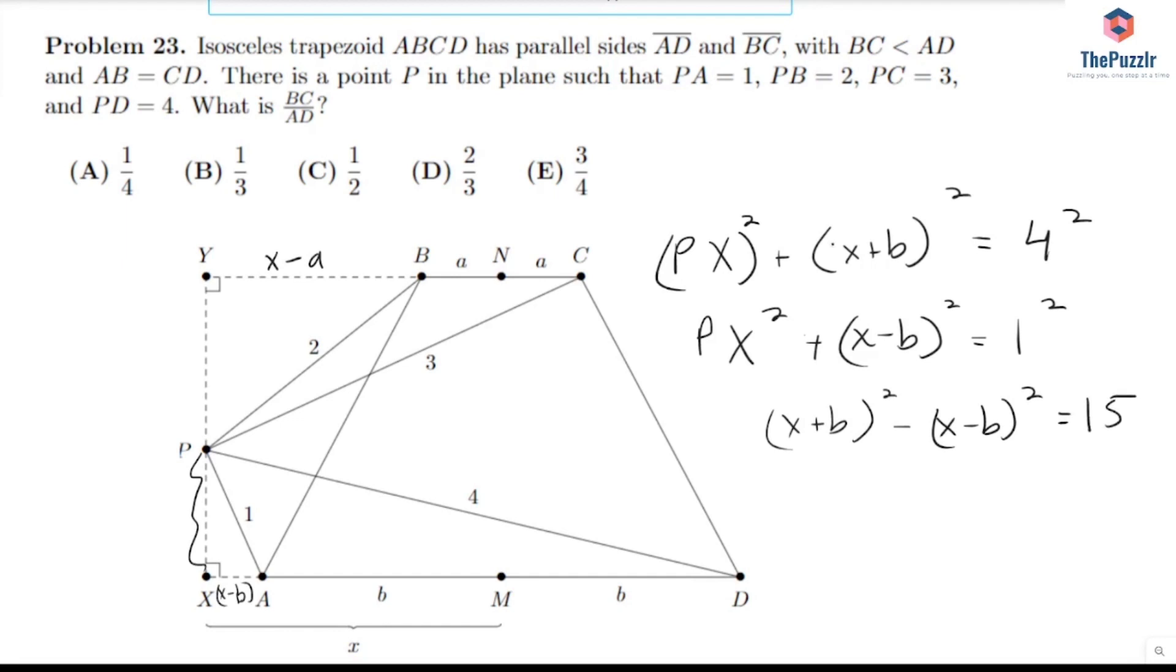And that's going to give me X squared plus 2BX plus B squared. Now a lot of the squared terms are going to cancel out. So minus X squared and then minus 2XB. And then we're subtracting that, so plus 2XB. So 2BX and then minus B squared equals 15. Or that 4BX equals 15.